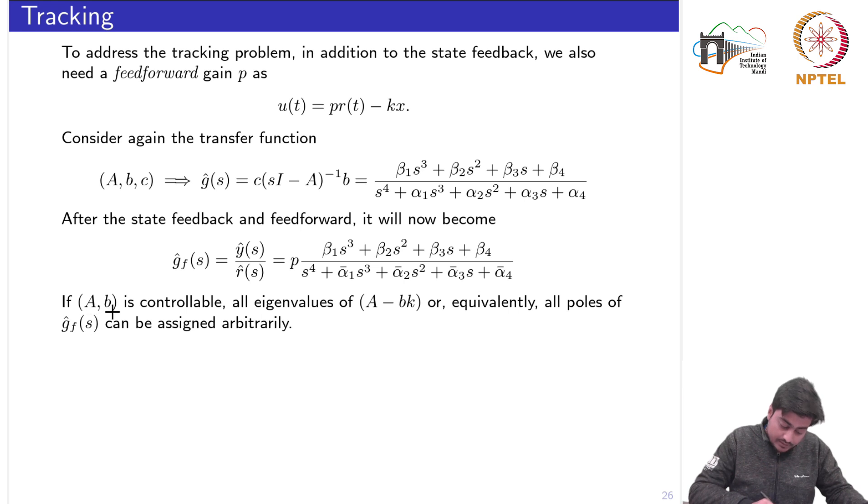If AB is controllable, if the original AB pair is controllable, then all the eigenvalues of the state feedback state matrix A including the state feedback gain or equivalently all poles of this g hat can be assigned arbitrarily.